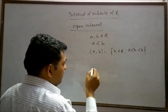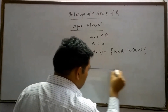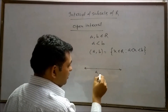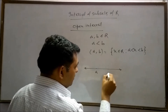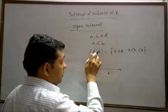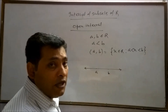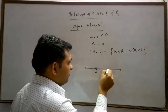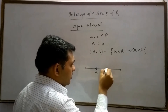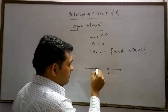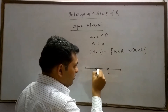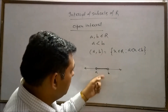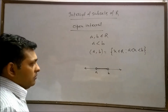On the number line, this interval can be represented by marking point a and point b. Since a and b are excluded, we draw open circles at both points. The numbers lying between a and b form the interval, so the line between them is drawn dark.